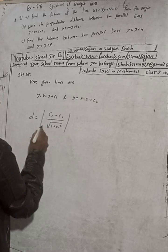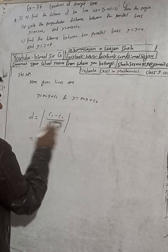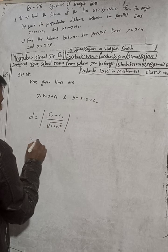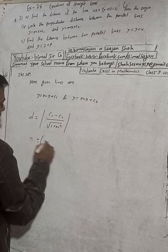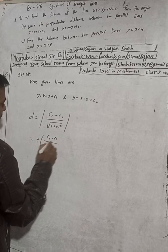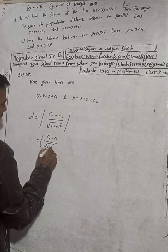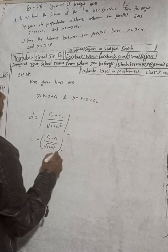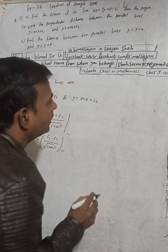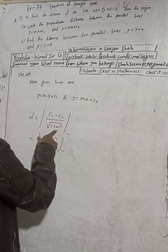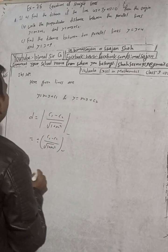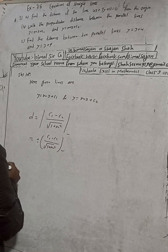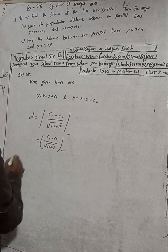You can also write this as plus or minus c1 minus c2 divided by root of 1 plus m squared. Both forms work. Now for part 2c: find the distance between the parallel lines.